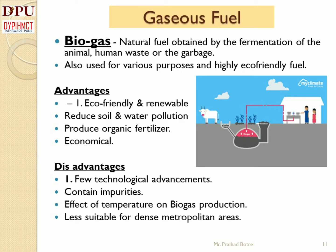Disadvantages of biogas: First, very few technological advancements in the production of biogas — the systems used are not efficient enough to meet large population needs due to unwillingness of the government sector. Second, it contains impurities — after refinement and compression, biogas still contains impurities. Third, biogas generation is affected by weather; the optimal temperature required is 37 degrees centigrade, which is not possible during all seasons. Fourth, it is less suitable for dense metropolitan areas due to non-availability of raw ingredients.